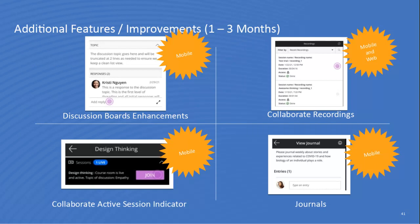For mobile experiences: we continue to align our mobile solutions around web-responsive versions of Learn Ultra — optimizing things like discussion board flow, making it easier to access Collaborate recordings, giving clearer indication in the app when a Collaborate session is in progress, and finalizing the full release of journals in the app.